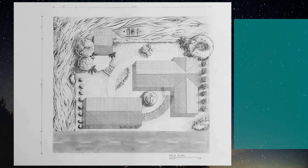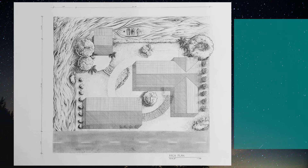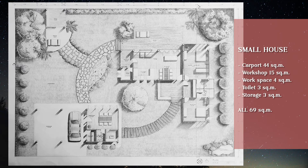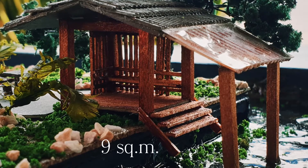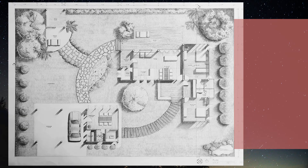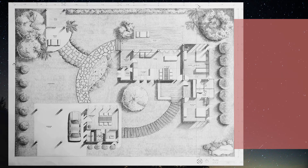The area of the site is 825 square meters. The remaining space under the construction is 600 square meters. The total area of both houses is 221.4 square meters and 9 square meters of waterfall pavilions. The construction cost calculated from the middle price is 2,600,000 baht, and this price is for the Bangkok area only.